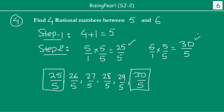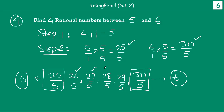So दोस्तों, again using the two-step technique, between 25 by 5 — which is nothing but 5 — and 30 by 5 — which is nothing but 6 — these two are nothing but 5 and 6. And हमने देखा कि between 5 and 6 we have suddenly found 4 rational numbers: 26 by 5, 27 by 5, 28 by 5, and 29 by 5. We hope you are getting a good handle on how to find rational numbers between integers using the two-step technique.